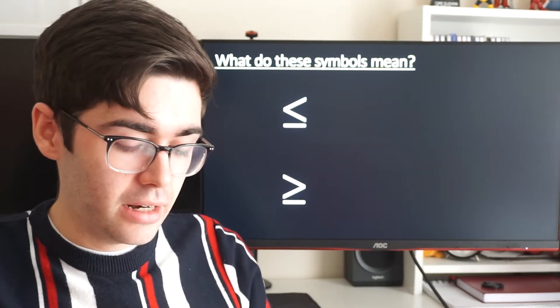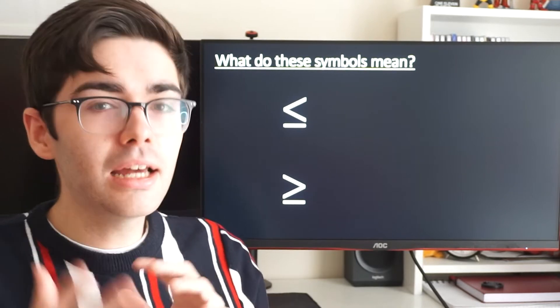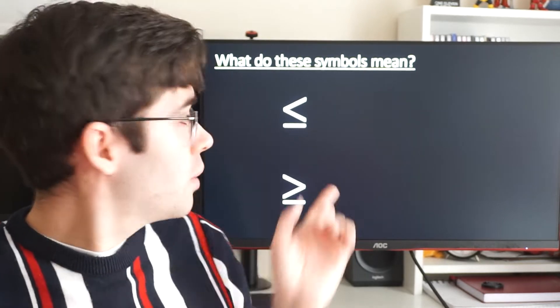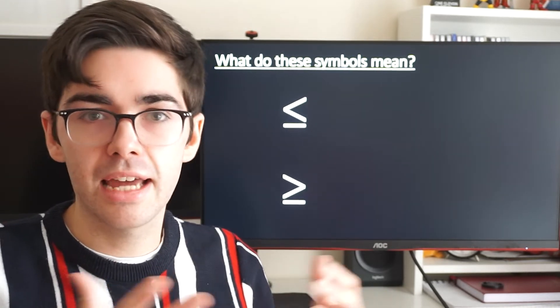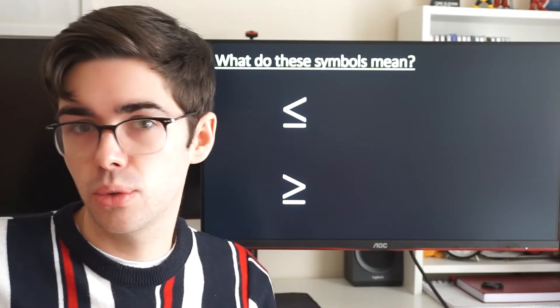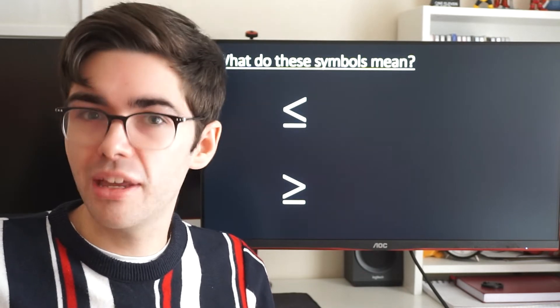So if we have a look at some more symbols then, these symbols are slightly different. What's changed about these? Well, they've got these lines underneath. They kind of look like our symbols from before, our less than and our greater than, have had a baby with an equal sign. And that is kind of what they mean as well.